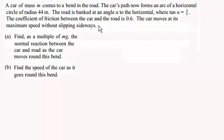The coefficient of friction between the car and the road is 0.6, and the car moves at its maximum speed without slipping sideways. In part A, we've got to find as a multiple of mg the normal reaction between the car and the road as the car moves round this bend, and in part B, find the speed of the car as it goes round this bend.